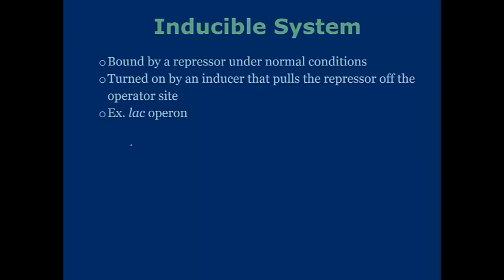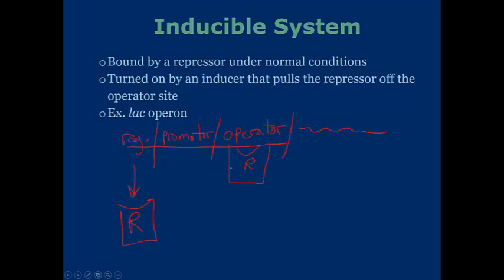So to draw this out, if we've got a given sequence, there's going to be the regulating region, the promoter — which is where RNA polymerase is going to want to bind to synthesize — and then the operator, and then the rest is just the subsequent gene. The regulator is going to synthesize a repressor, and this repressor is going to bind to a site at the operator. However, in the presence of lactose, this is going to bind to the regulator, thus inhibiting its function, which means that the binding to the operator is not going to occur. If that happens, then RNA polymerase is going to transcribe this gene, allowing for the formation of lactase.